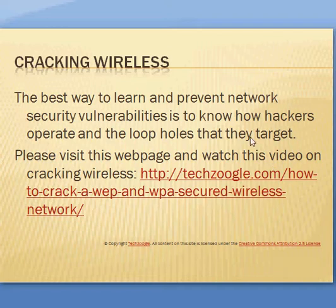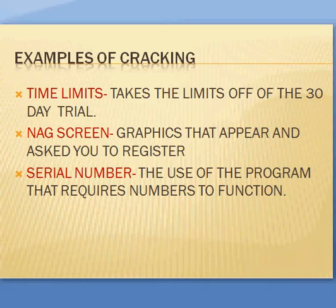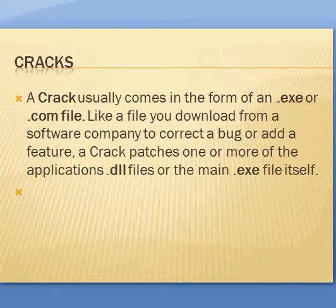Examples of cracking include: time limits — takes the limits off a 30-day trial; nag screens — tricks that appear and ask you to register; serial numbers — the use of a program that requires numbers to function. A crack usually comes in the form of a .exe or .bin file, similar to a file you download from a software company to correct a bug or add a feature. A crack patch is one or more of the application's .dll files or the main .exe file itself.